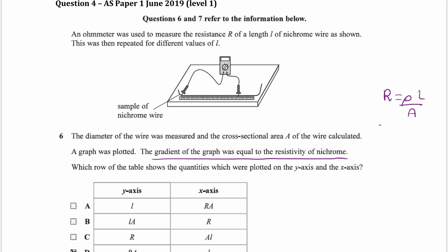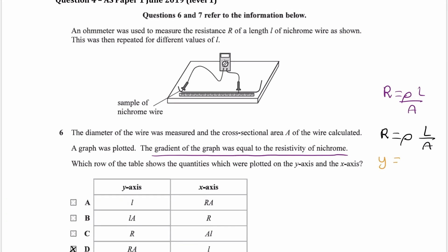First of all, we can keep the equation as it is: resistance is equal to resistivity times length over area. When we write it like that, our y would be R, our m would be rho, and our x would be L over A. So we plot a graph with resistance on the y-axis and length over area on the x-axis, and then our gradient for this line would be rho. So that's one option.